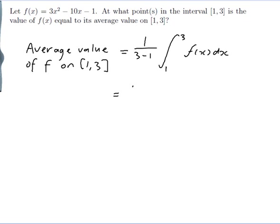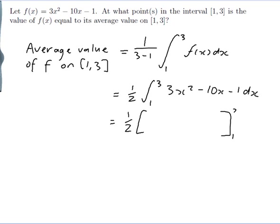So that would be one half of the integral from 1 to 3 of 3x squared minus 10x minus 1 dx, which equals one half of the antiderivative of 3x squared minus 10x minus 1 evaluated from 1 to 3. Antiderivatives of powers are really easy.